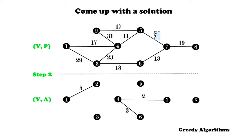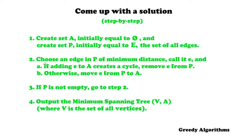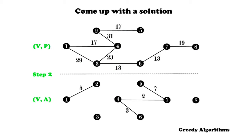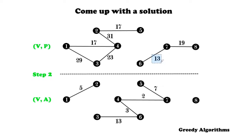Next, the edge with minimum distance is 7. It doesn't create a cycle, so we add it to A. The edge with minimum distance 11 actually will create a cycle, so according to the step-by-step guide we remove it from P. Now there are two edges with minimum distance 13. It doesn't matter which one you pick — let's take the edge from vertex 3 to vertex 6. As it won't create a cycle, we move it from P to A. The other edge with distance 13 would create a cycle, so we remove it from P.